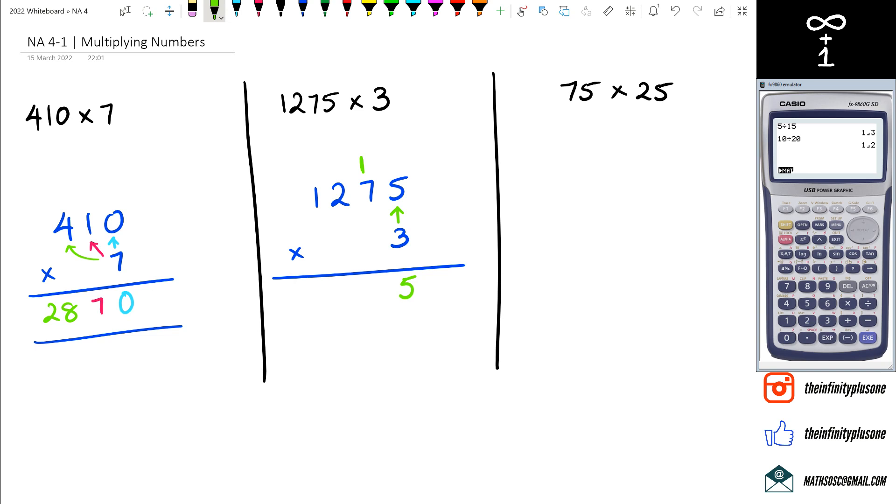So next we've got 3 times 7, which happens to be 21, and of course we've got to add that 1 now, which means it's going to be 22. So we're going to write that 2 and also chuck that 2 at the top there. Hopefully you're with me in this. Next we've got 3 times 2, which equals to 6. 6 plus 2 is 8.